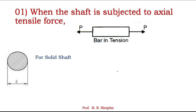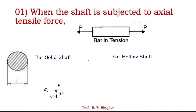For the solid shaft with diameter d, the tensile stress σ_t equals the load P divided by the cross-sectional area. Since the shaft is circular and solid, the area is π/4 · d². This gives the tensile stress induced when the shaft is subjected to axial tensile force only.